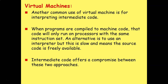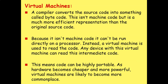Another common use of virtual machines is for interpreting intermediate code. When programs are compiled to machine code, that code will only run on processors with the same instruction set. An alternative is to use an interpreter, but this is slow and means the source code is freely available. Intermediate code offers a compromise between these two approaches. Here the compiler converts the source code into something called bytecode — this isn't machine code, but it is a much more efficient representation than the original source code.